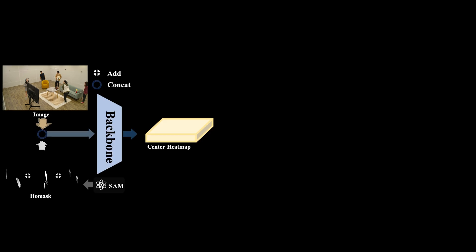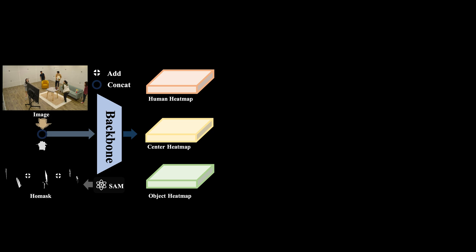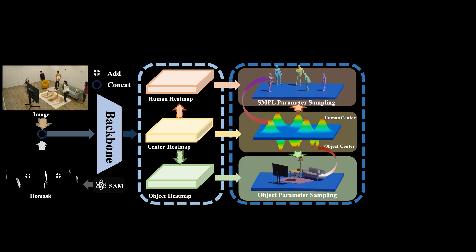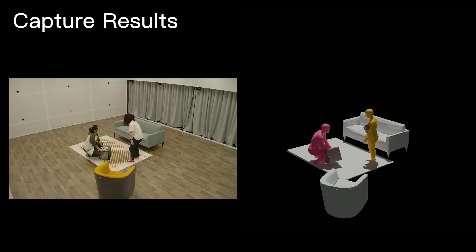With the unique HOI-M3 dataset, we introduce two novel data-driven tasks. The first one is monocular multiple HOI capturing. Given an input image, the pipeline predicts multiple maps: 1. The center heat map predicts the probability of the human's root position or object's center position. 2. The human mesh map contains the SMPL parameters and root depth. 3. The object mesh map contains the object's 6D pose parameters and center depth. Through the sampling process, multiple humans and objects can be captured within a single forward pass. Here are some of our results.